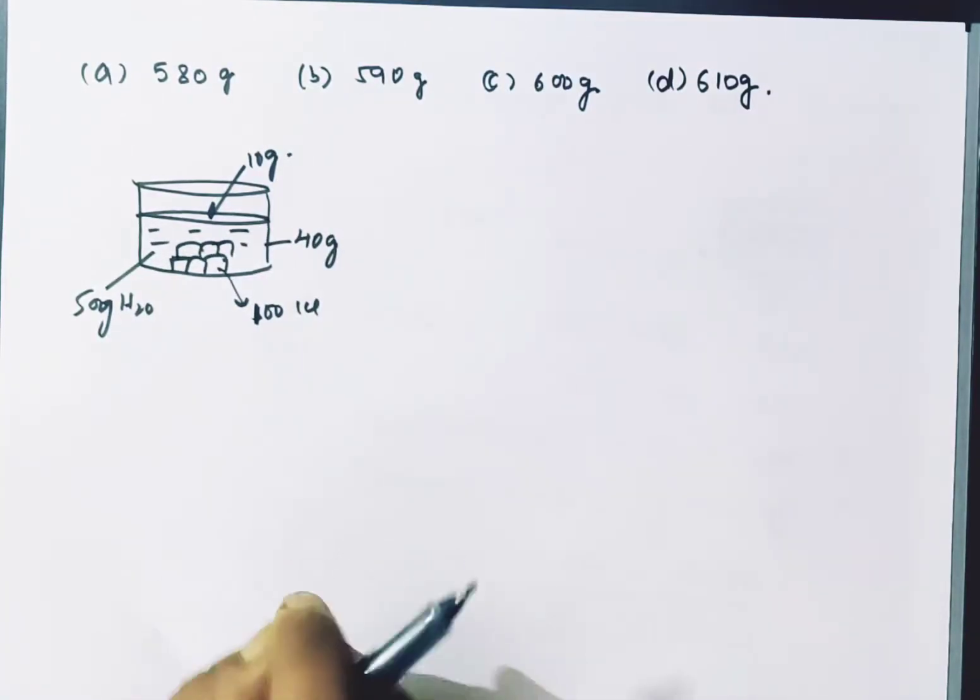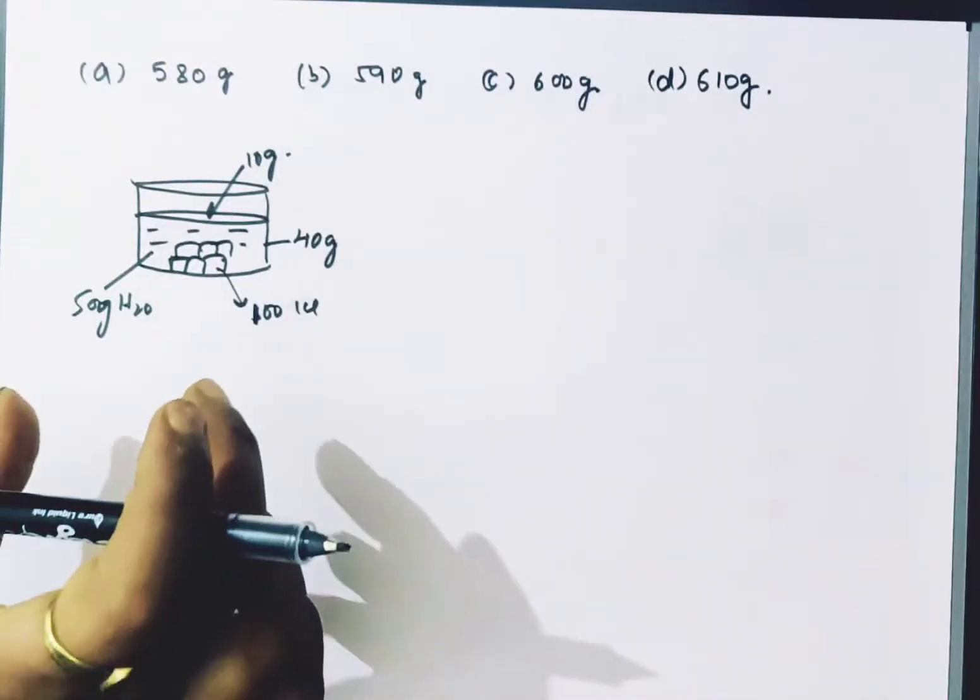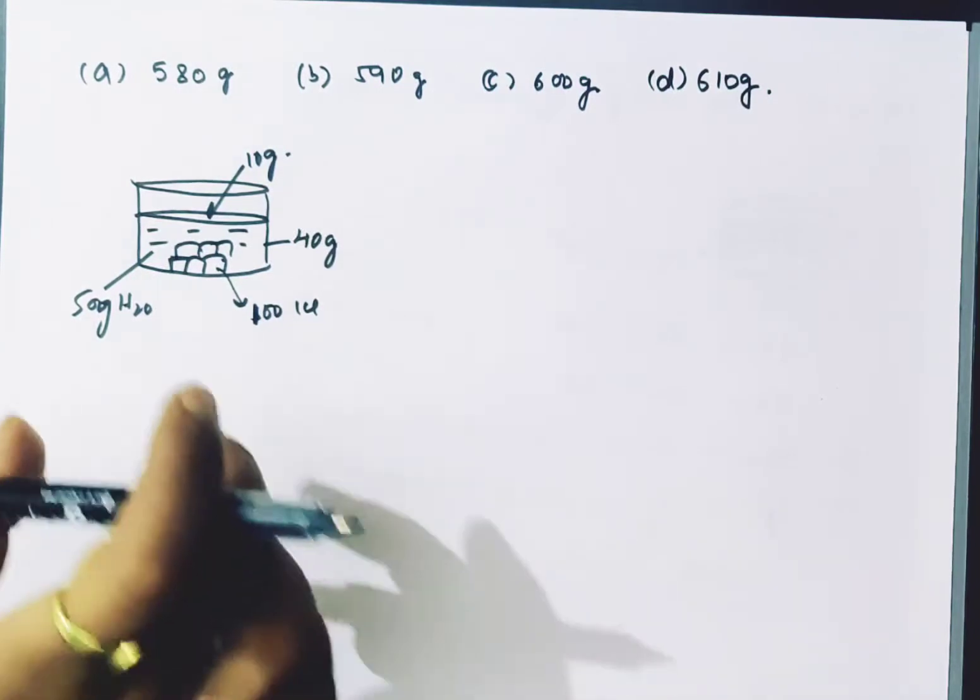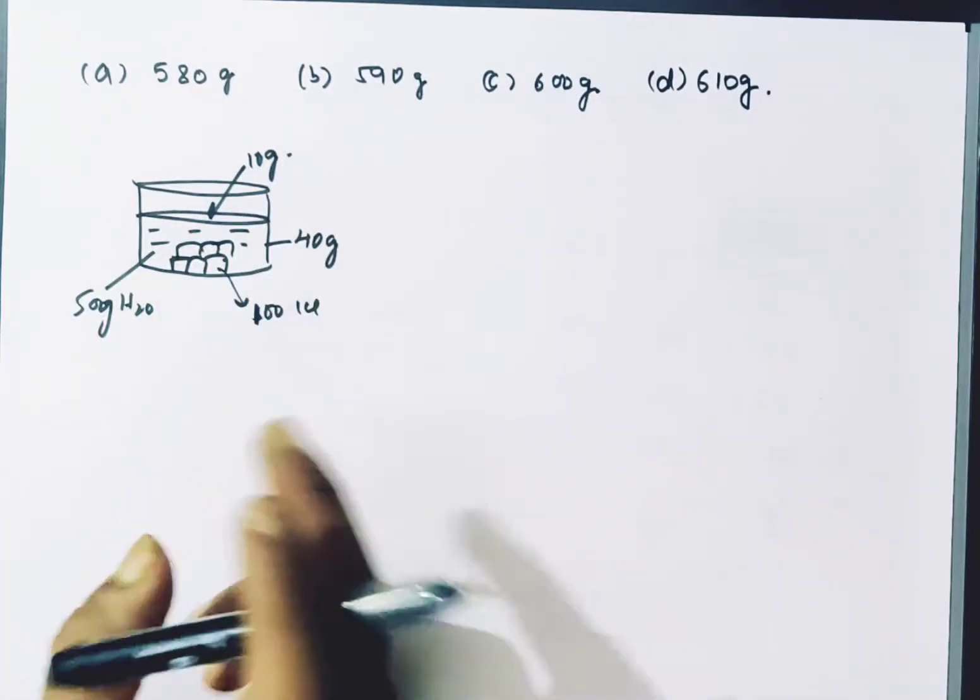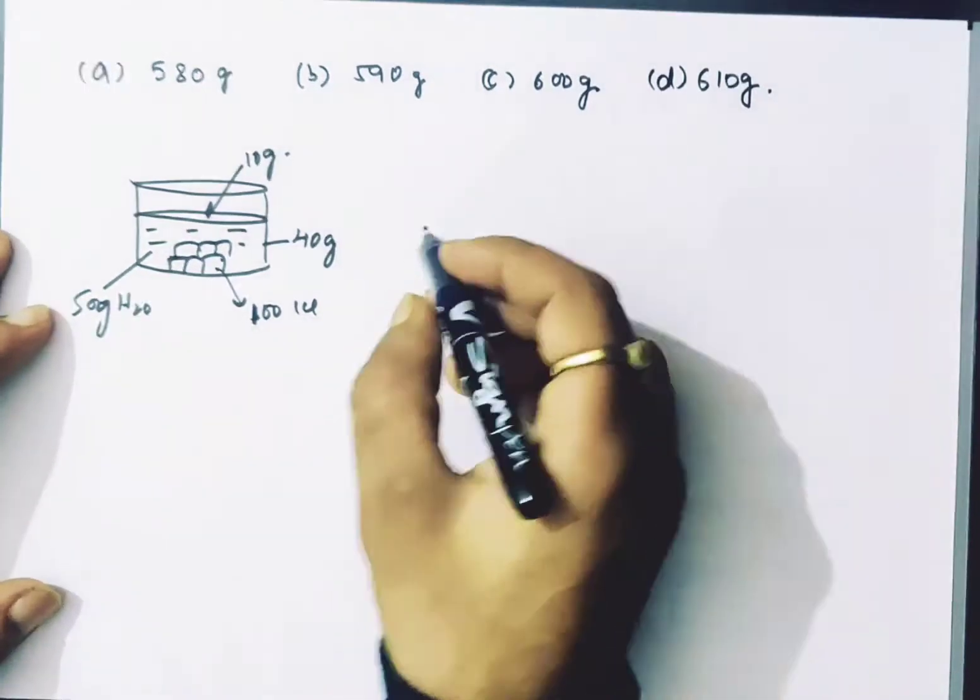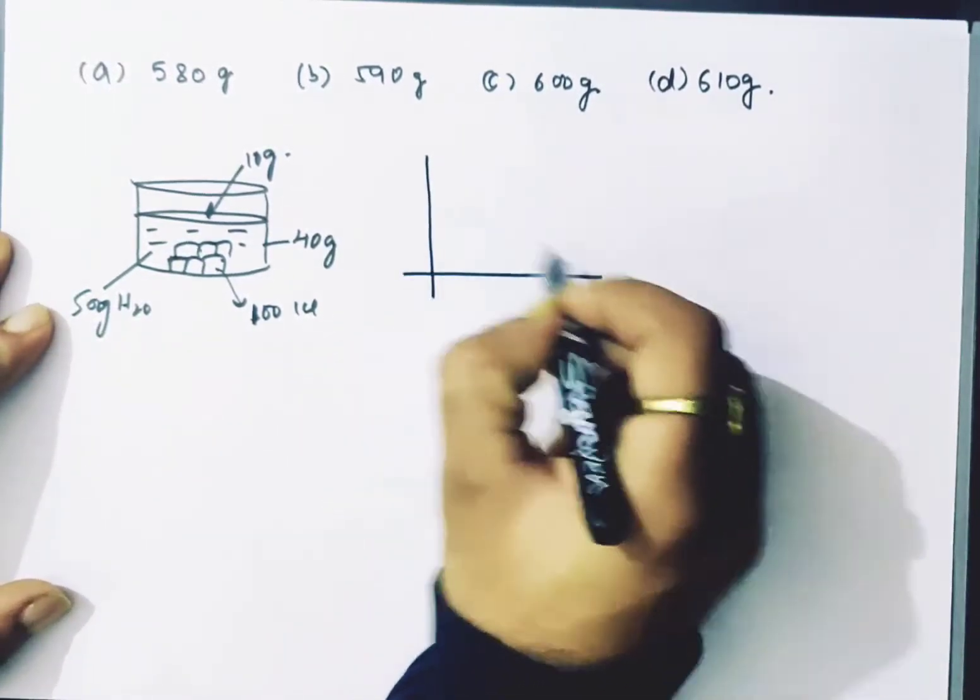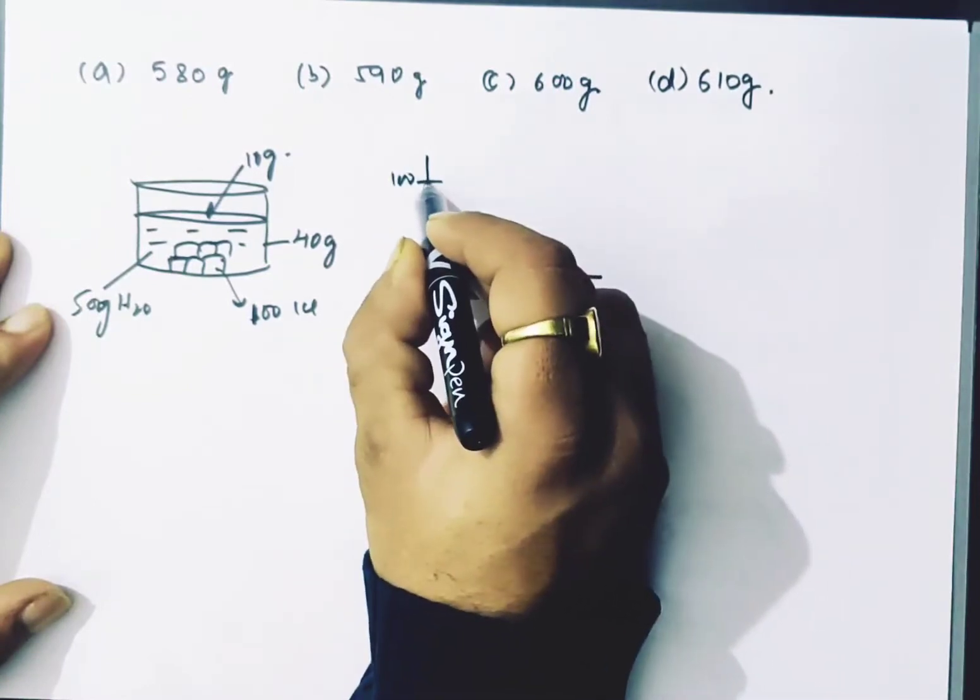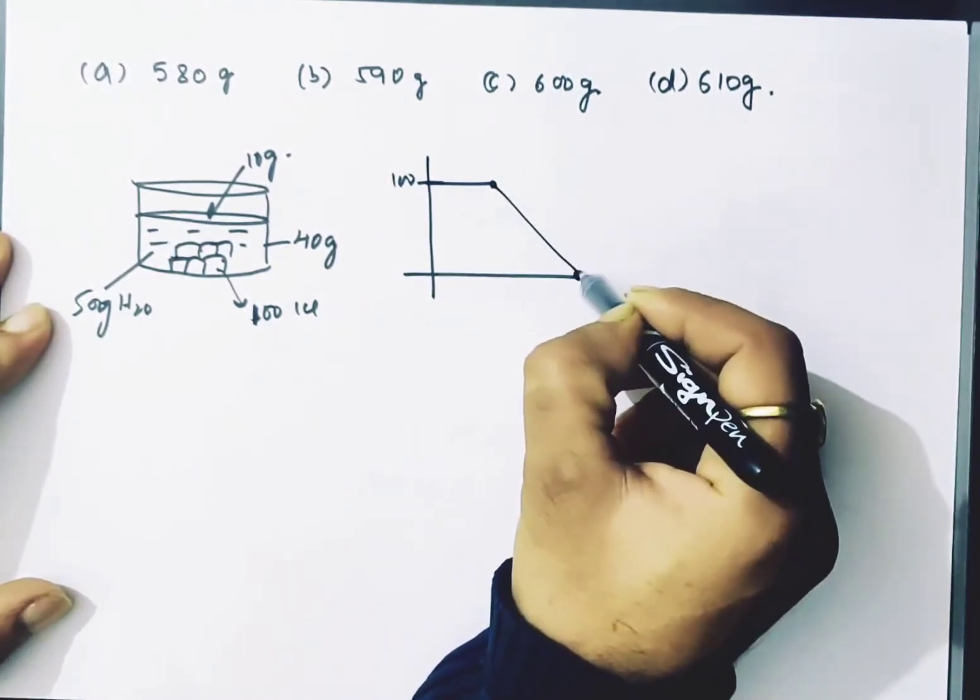So first we need to consider that the steam will condense. We will bring the steam from 100 degrees - first convert it into liquid, then cool the water down to 0 degrees.